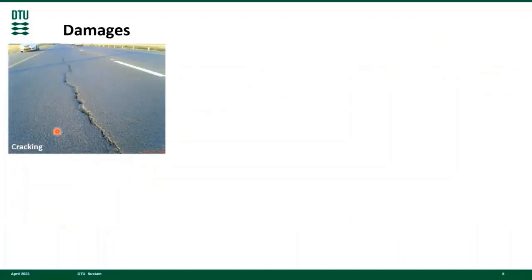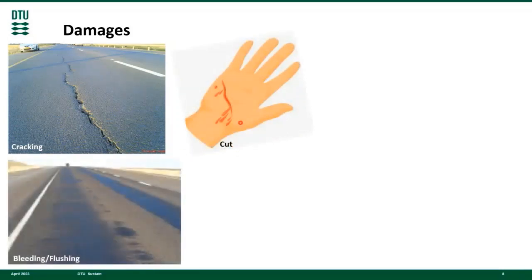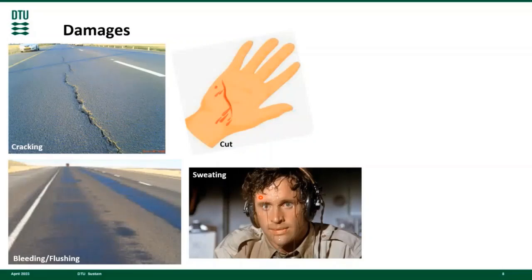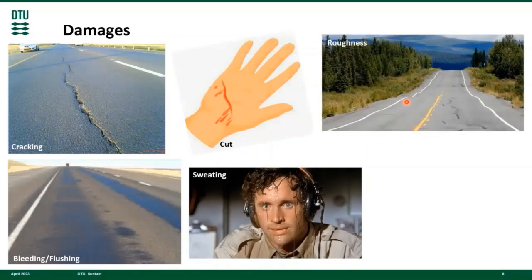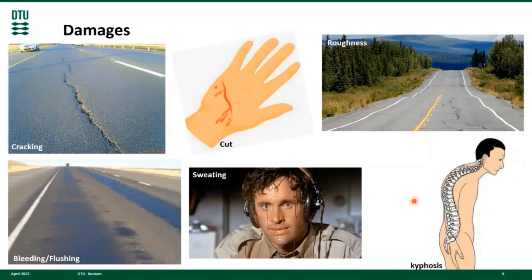Here is a common damage in asphalt pavements called cracking. The human equivalent for this is a cut. Here is another common damage in asphalt pavements called bleeding or flushing. This happens when the bitumen decides to leave the asphalt concrete, normally under hot temperature conditions. The human equivalent of this is sweating, also happening under hot temperature conditions. Another common damage for asphalt pavements is roughness, where the road loses its smoothness. The human equivalent for this is kyphosis.